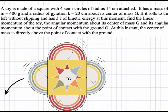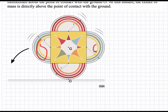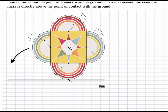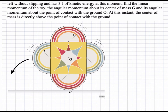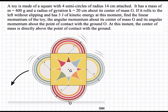We're asked to find the linear momentum of the toy, the angular momentum about its center of mass G, and the angular momentum about the instantaneous center of zero velocity O. To solve this, we first analyze the geometry. We have four semicircles of radius r attached to a square, so the square has a height and width of 2r. We'll use the given kinetic energy to determine the angular velocity omega, which we need to calculate the linear and angular momentums.